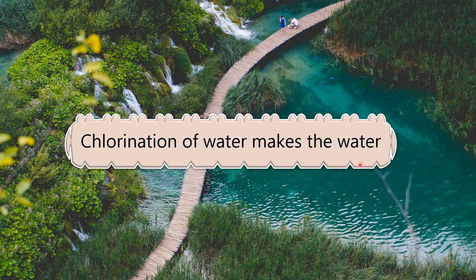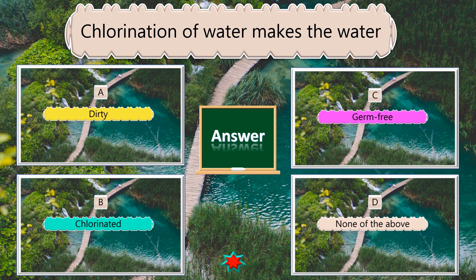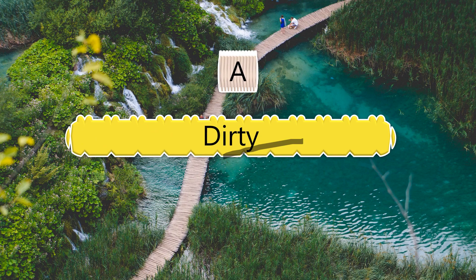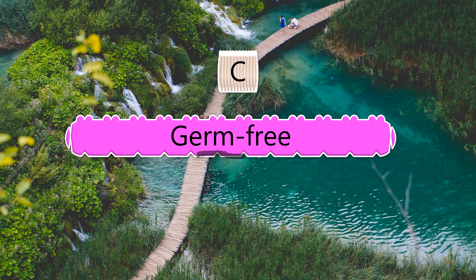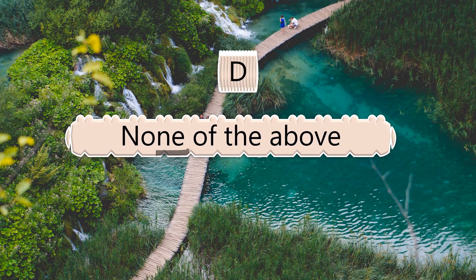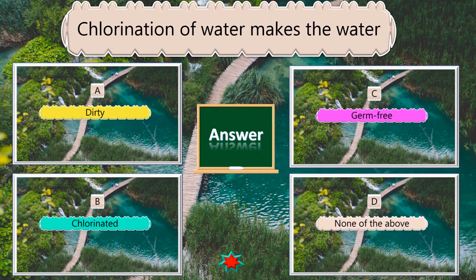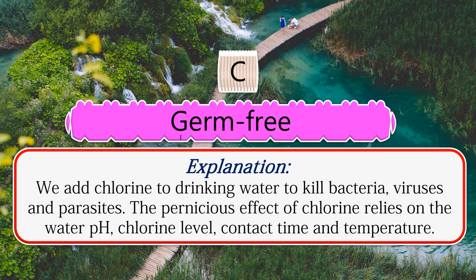Chlorination of water makes the water what? Options: dirty, contaminated, germ-free, none of the above. The answer is germ-free. We add chlorine to drinking water to kill bacteria, viruses, and parasites. The effect of chlorine relies on the water pH, chlorine level, contact time, and temperature.